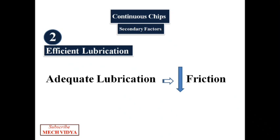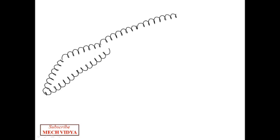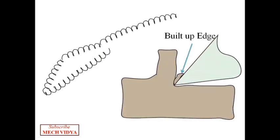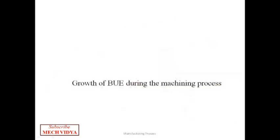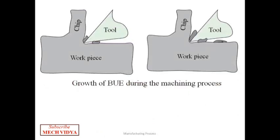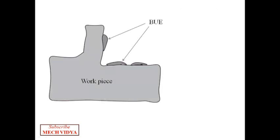After continuous chips comes the second category: continuous chips with built-up edge. The chip obtained here is smooth like a continuous chip, but a small layer of work material gets welded to the cutting edge of the tool due to high pressure and temperature. During machining, this built-up material grows then finally breaks off periodically. This extra metal sticks to the chip or work surface, causing poor dimensional accuracy and poor surface finish.